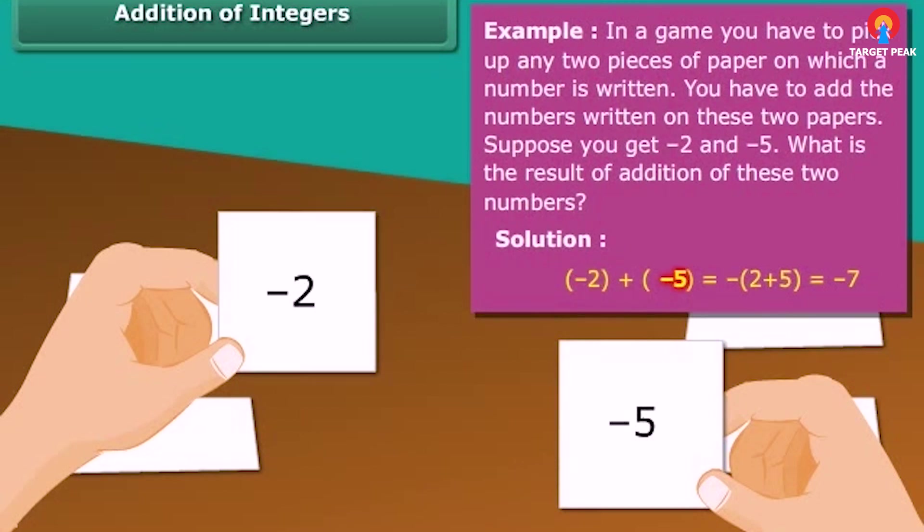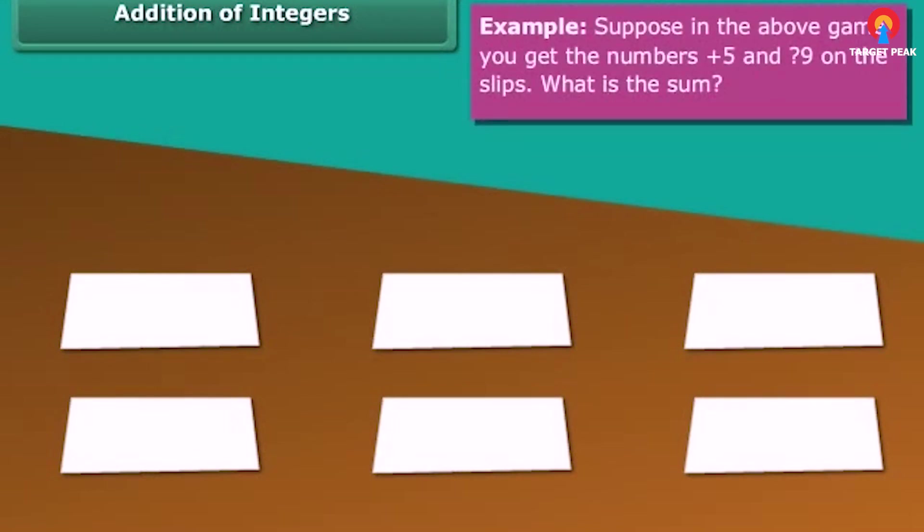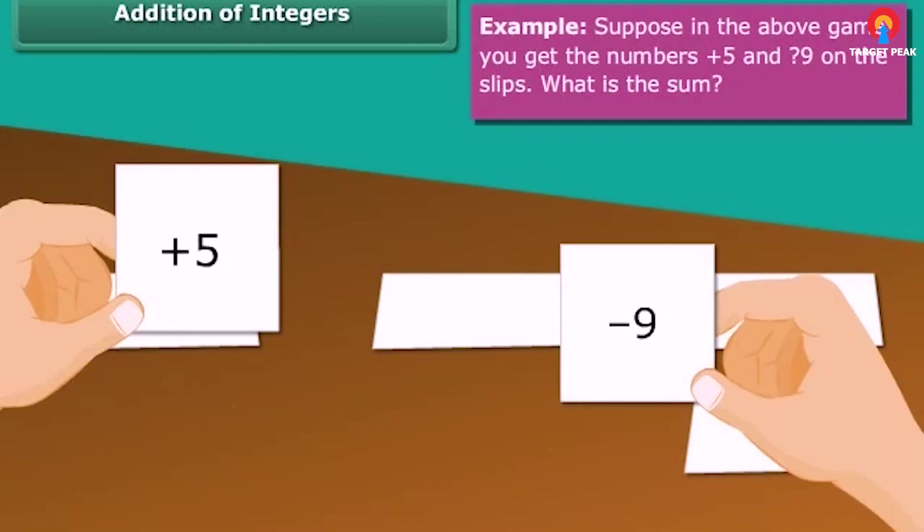Addition of two integers. Example: Suppose in the above game, you get the numbers plus five and minus nine on the slips. What is the sum? Plus five plus minus nine, which is equal to minus four.